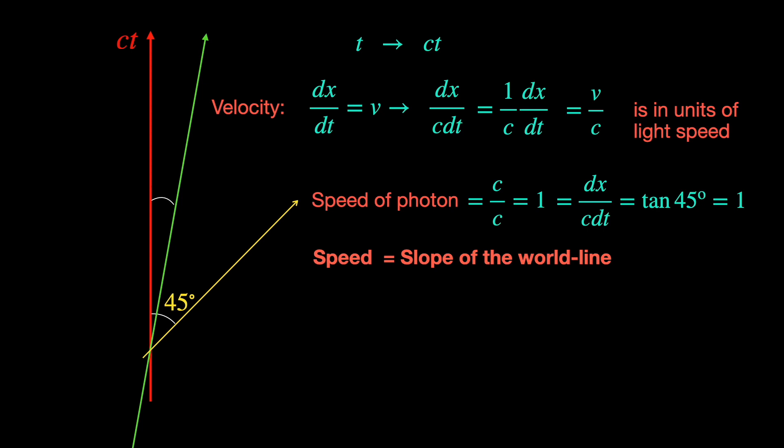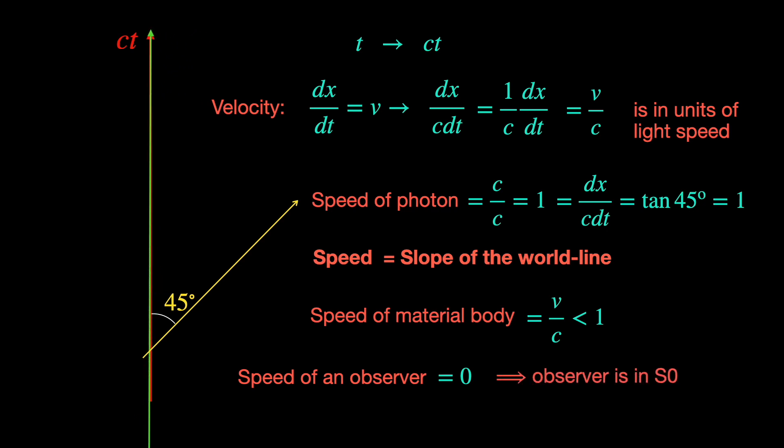So, the angle its world line makes with the vertical time axis of s0 frame is less than 45 degree and the corresponding slope representing its speed has to be a fraction. If the relative speed of an observer is 0 then he obviously is in the rest frame s0 itself and his world line has 0 slope and it coincides with the rest frame time axis. This means the vertical time axis of s0 is actually the world line of one of us observers belonging to s0.